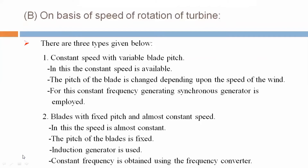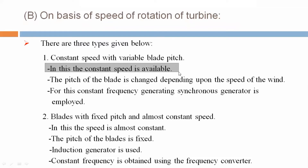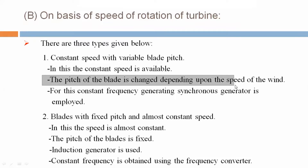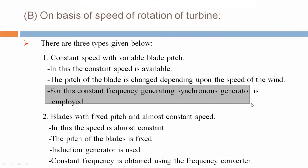B: On the basis of the speed of rotation of the turbine, there are three types. First: constant speed with variable blade pitch. In this, constant speed is available and the pitch of the blade is changed depending upon the speed of the wind. For this, a constant frequency generating synchronous generator is employed.